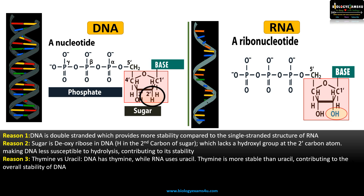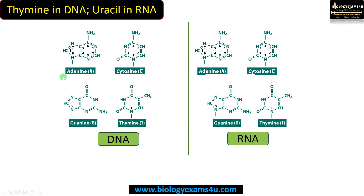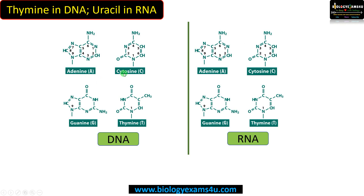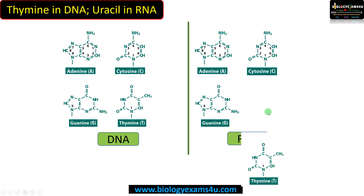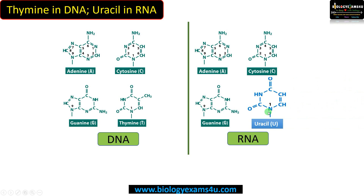Reason number three: DNA has thymine while RNA has uracil as a nitrogenous base. Thymine is more stable compared to uracil. The nitrogenous bases in DNA are adenine, cytosine, guanine, and thymine. In RNA, thymine is replaced by uracil. Uracil is less stable compared to thymine, and that makes DNA more stable.